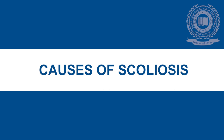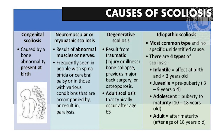Some causes of scoliosis. Causes can be congenital, neuromuscular or myopathic, degenerative, or idiopathic. In congenital scoliosis, it is caused by a bone abnormality present at birth. Neuromuscular or myopathic scoliosis are the result of abnormal muscles or nerves. Degenerative scoliosis results from traumatic bone collapse, previous major back surgeries, or osteoporosis.